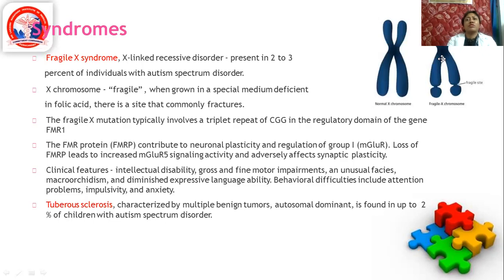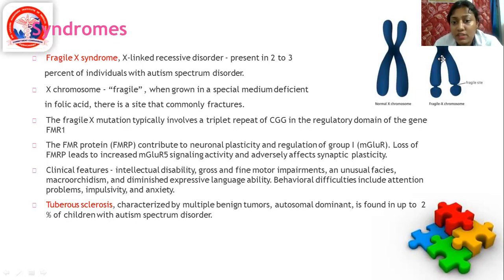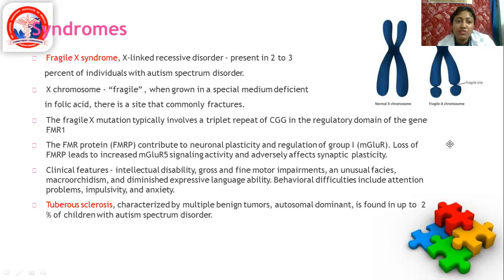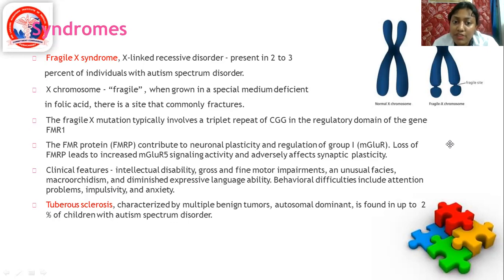Fragile X syndrome is an X-linked recessive disorder present in 2 to 3% of autism cases. The X chromosome is fragile when grown in a specific medium deficient in folic acid — there is a site that commonly fractures. The FMR protein (FMRP) contributes to neuronal plasticity and regulation of Group 1 mGluR. Loss of FMRP leads to increased mGluR5 signaling activity.